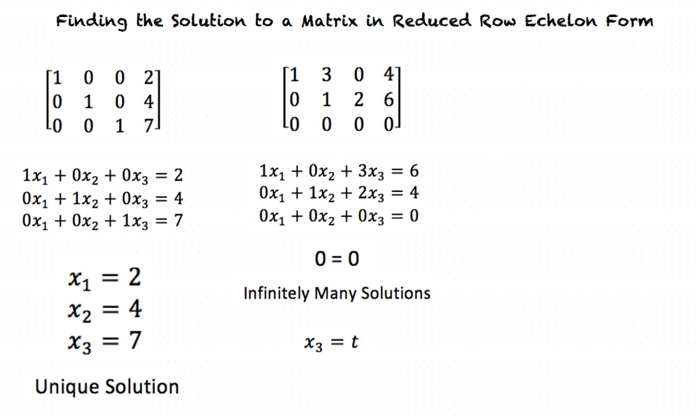Now we can solve for x1. We will use t in the place of x3. This will give us x1 plus 3t is equal to 6, which can be simplified to x1 is equal to negative 3t plus 6.